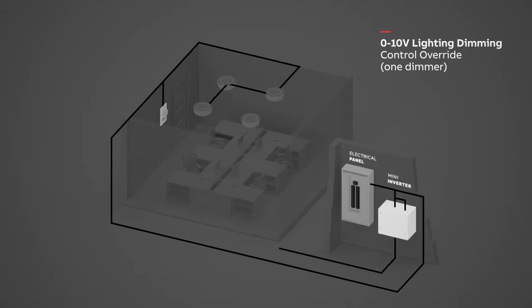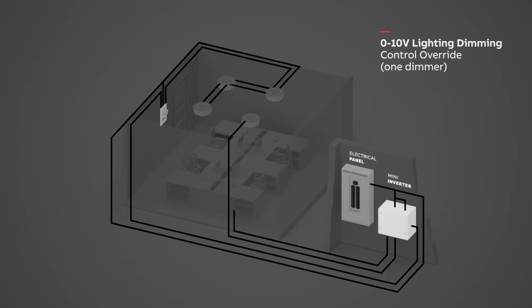Wire the Mini Inverter to the light that will be used as emergency light. Connect the wall dimmer to the lights that will not be used as emergency lights. Connect the wall dimmer to the Mini Inverter LCO Module. Wire the LCO to the light that is being used as emergency.